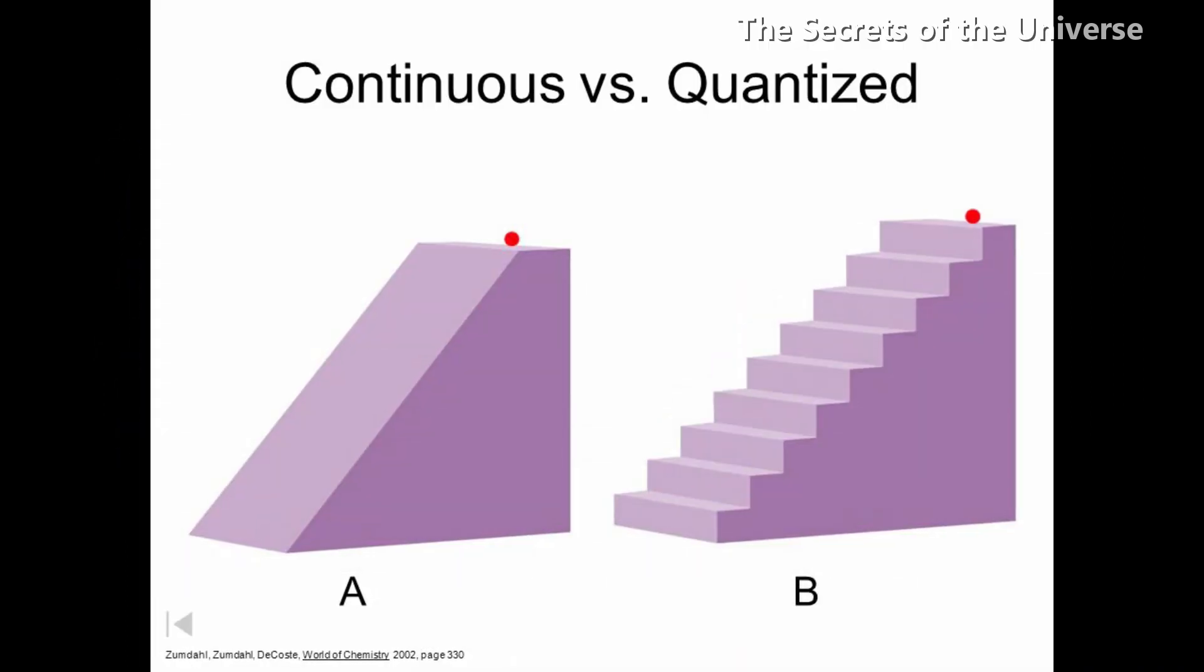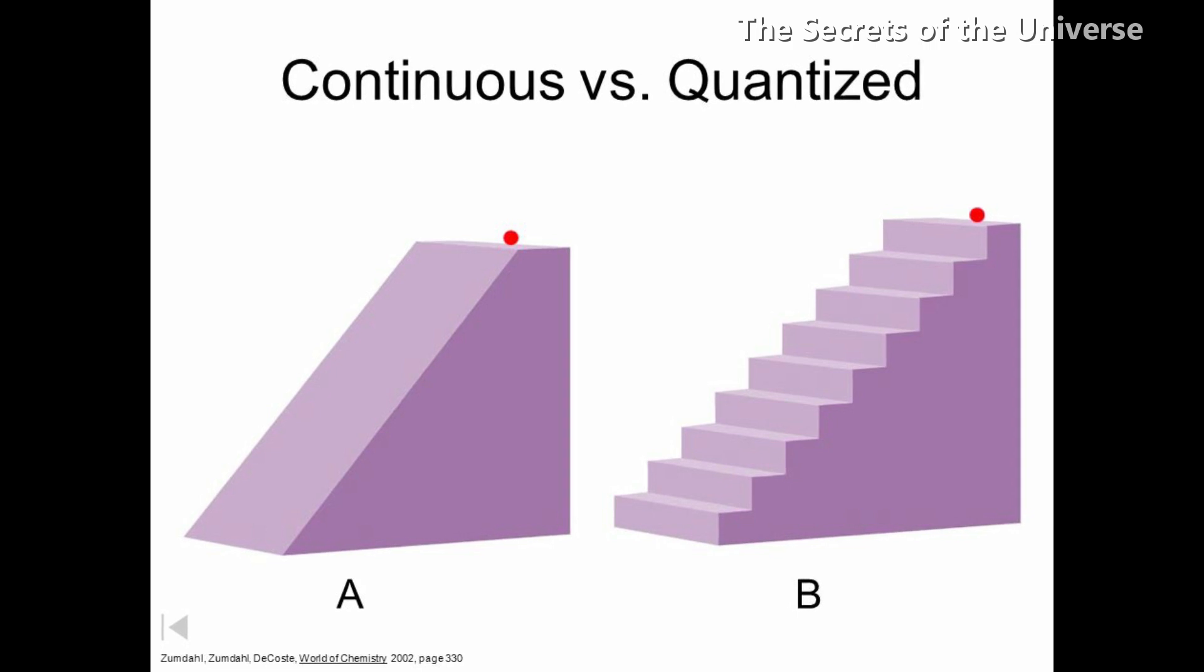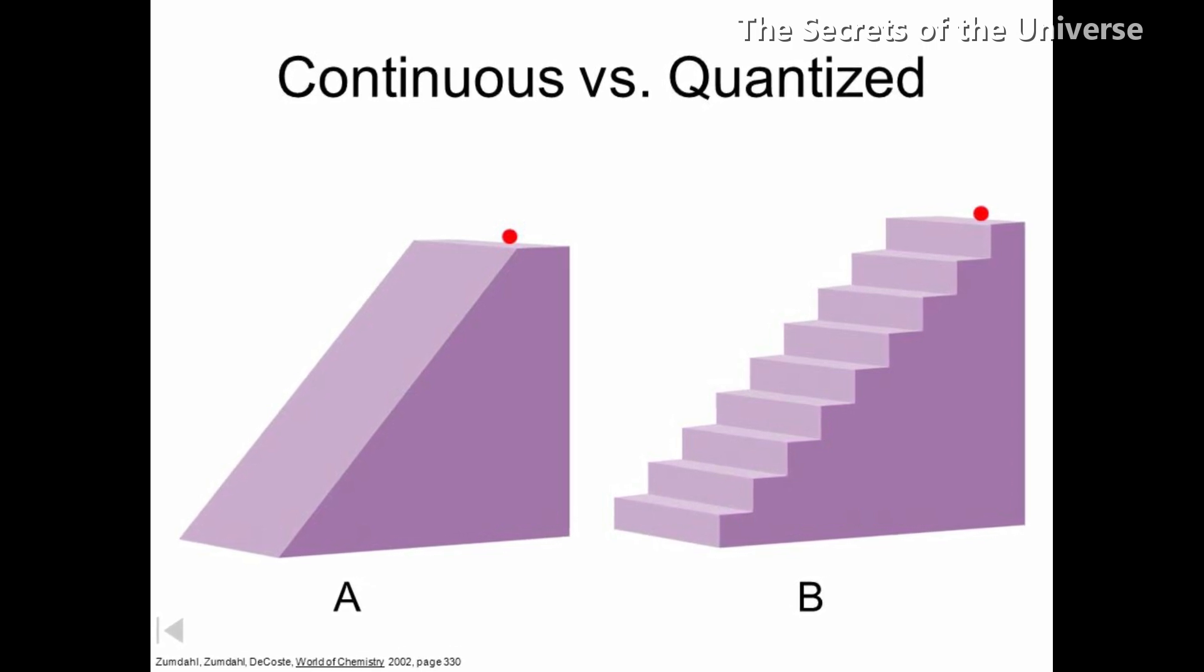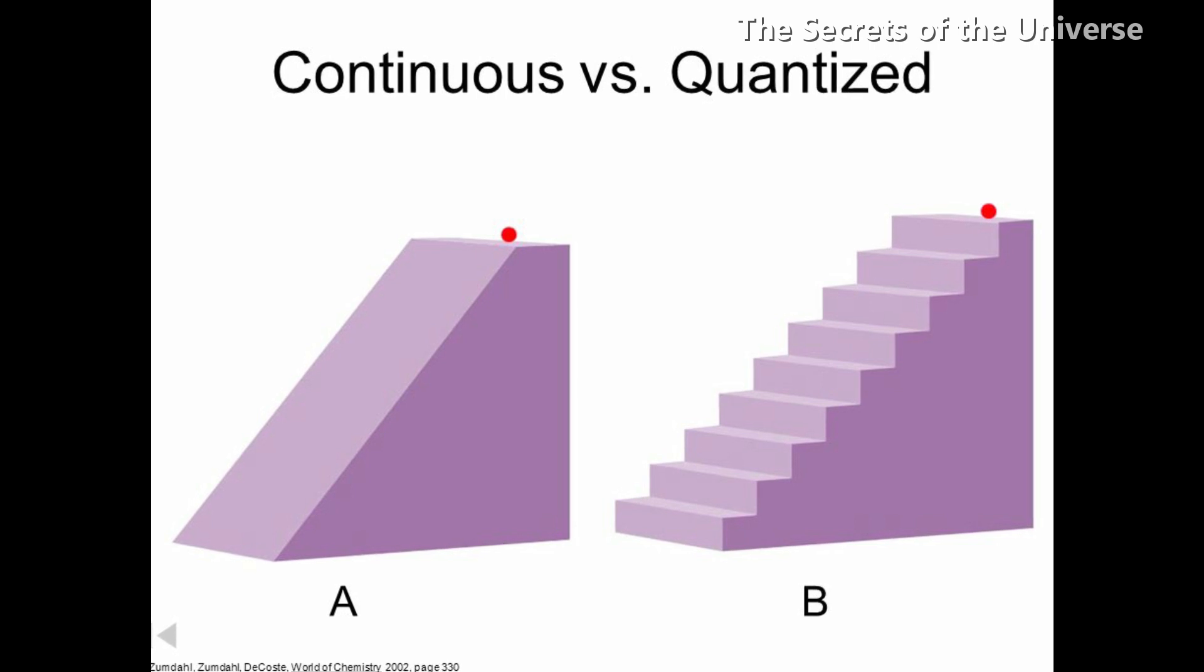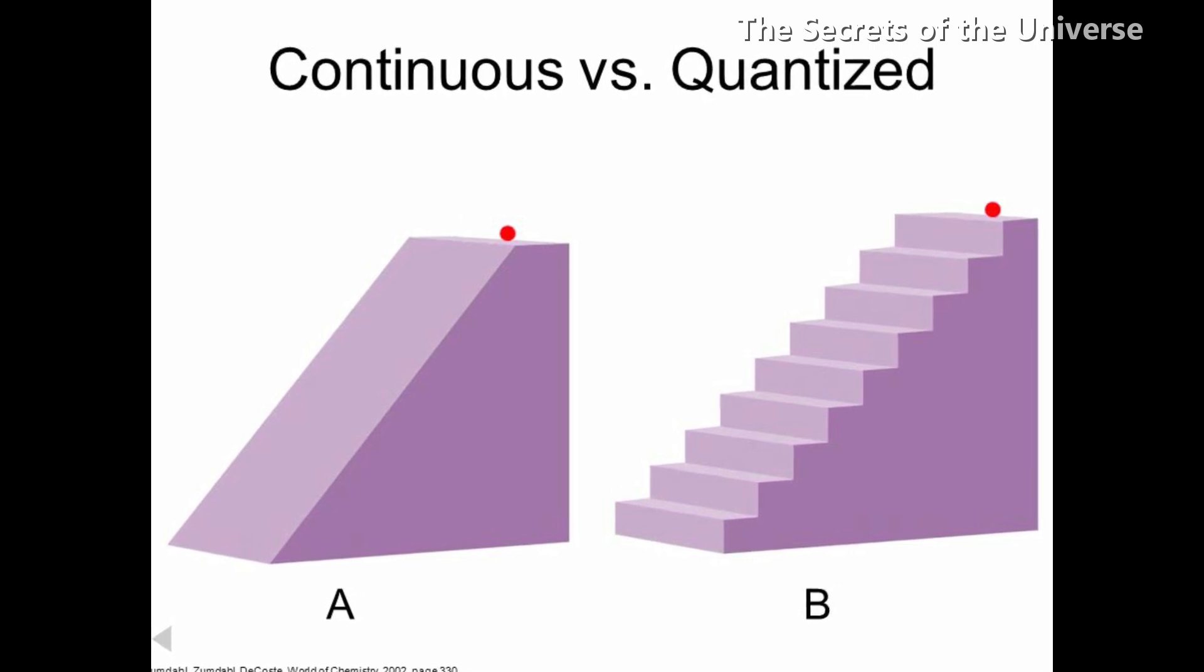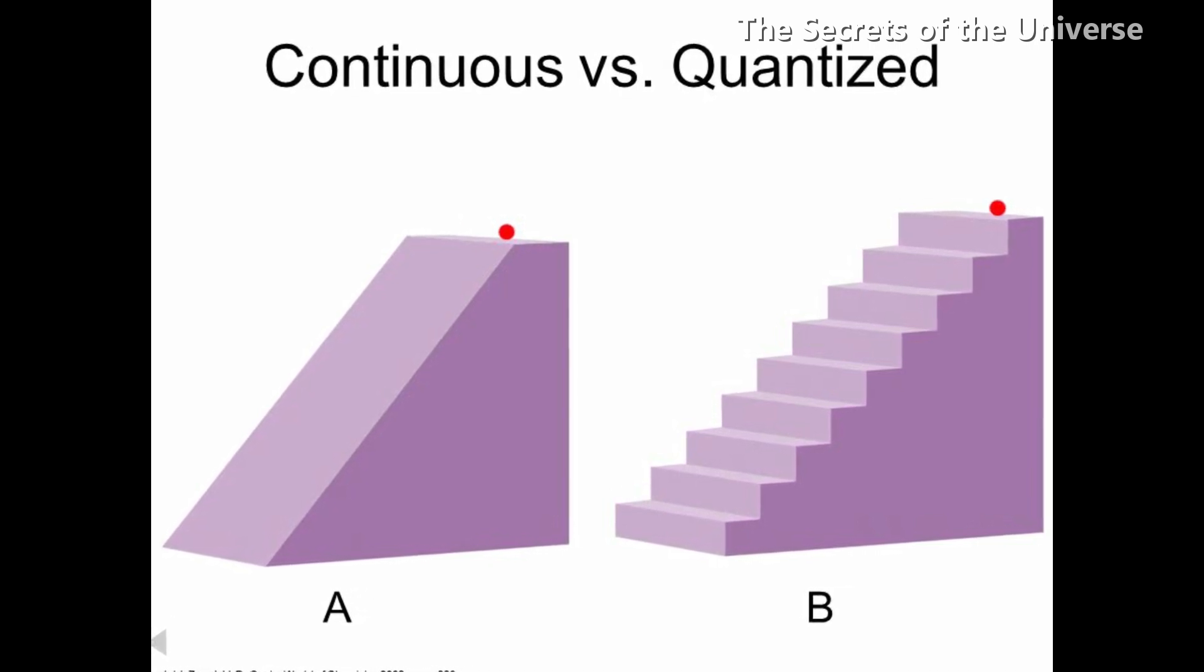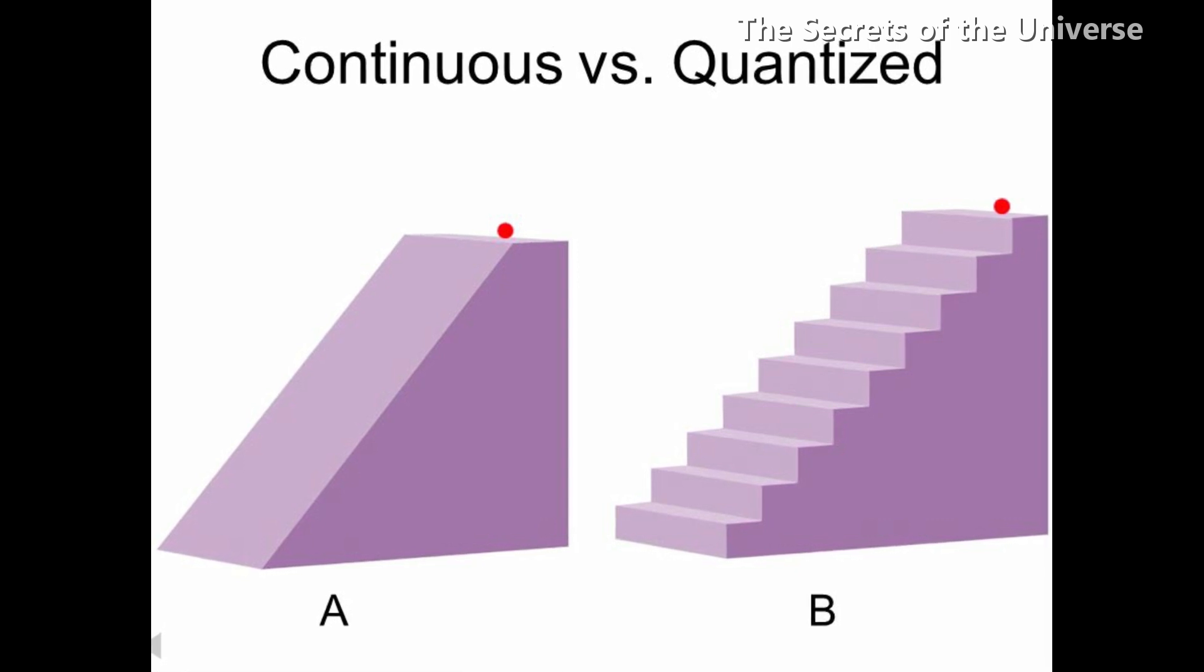He said that energy emitted from a radiating source is quantized. This means that the energy cannot be in fractions. That is, 1.5 units, 2.6 units, 3.9 units were not allowed.